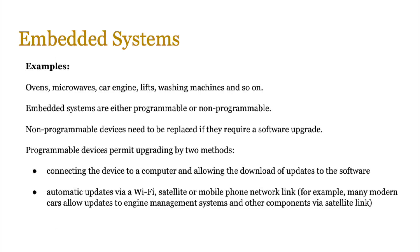What are some examples of embedded systems? In the home you'll have ovens and microwaves. Outside, you'll have car engines, lifts, and so on. Any type of electronic device which we can program or control normally has an embedded system built in.